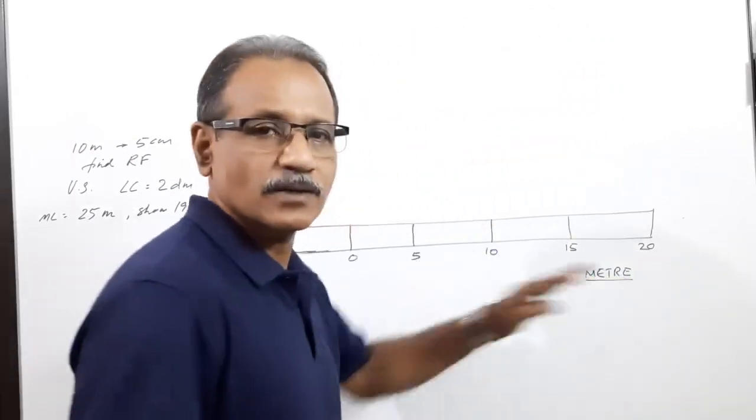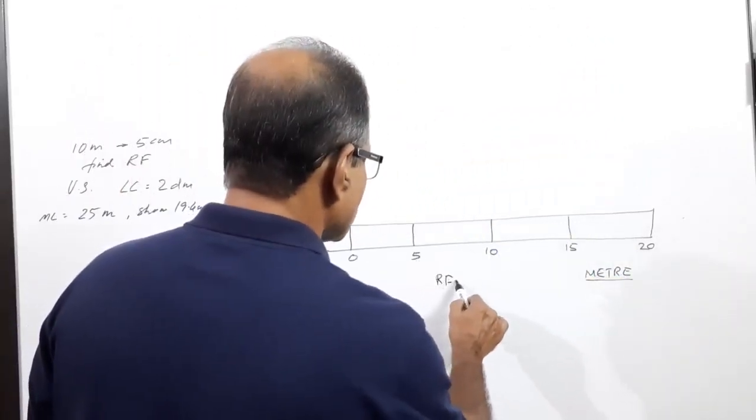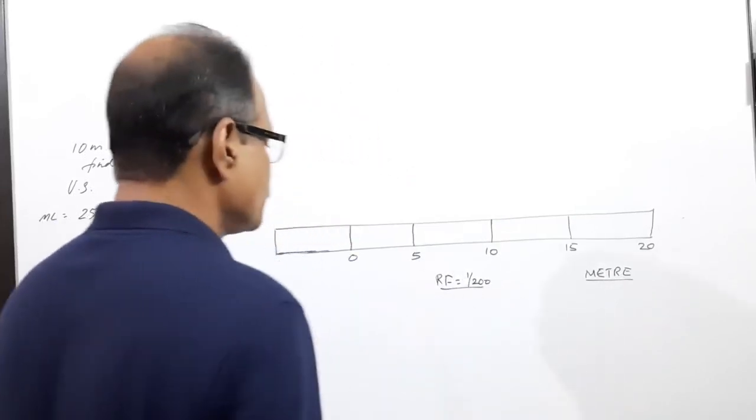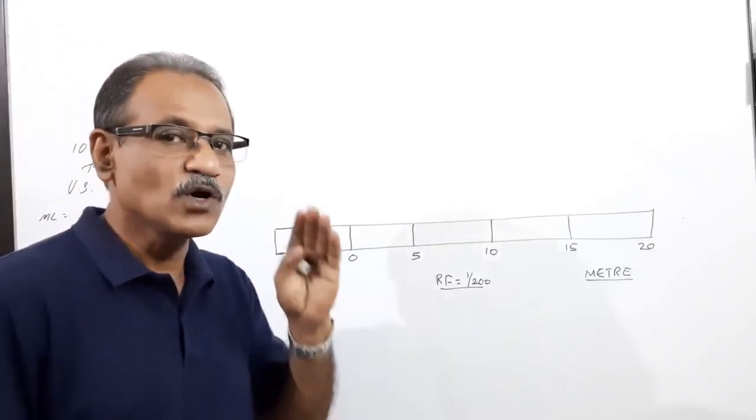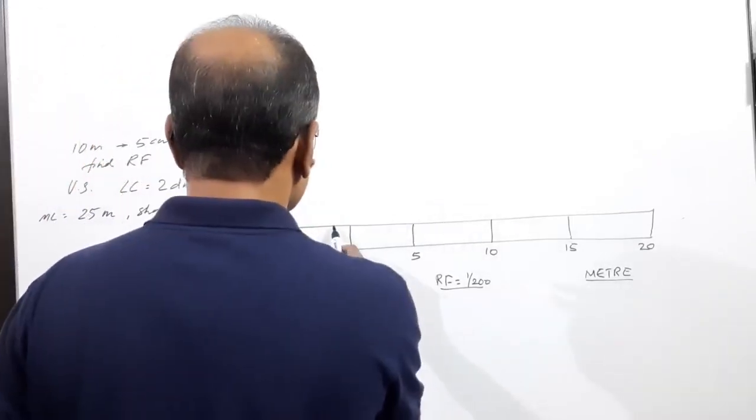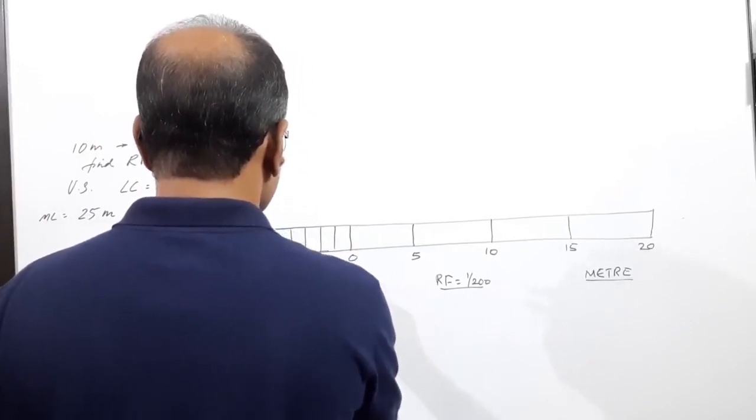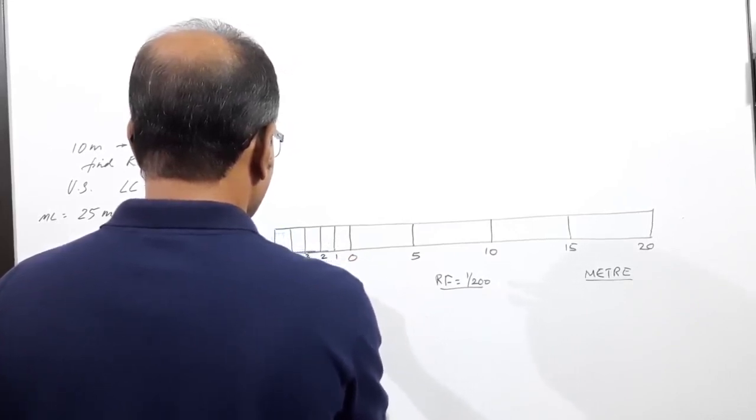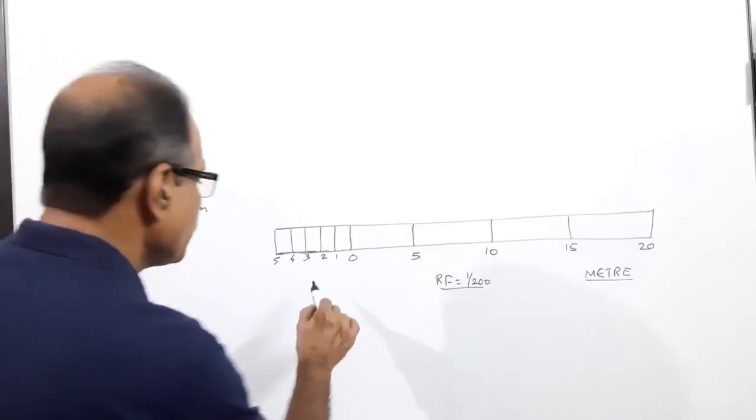Print and give an underline. Write the RF at the center: RF equals 1 divided by 200, underline that. Now divide this 5 meters into 5 equal parts: 1, 2, 3, 4, 5. What is the unit? Meter.